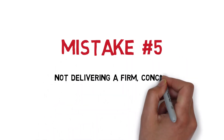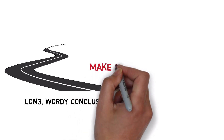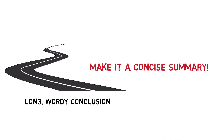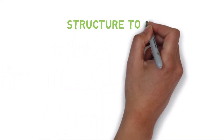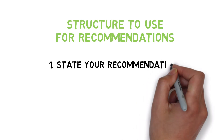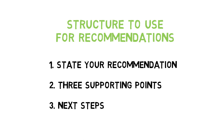Mistake number 5: not delivering a firm, concise recommendation. A lot of the time, candidates summarize all the work they did before proposing a recommendation at the very end. This is not the right approach, as the conclusion is meant to be a concise summary — not a regurgitation of everything that happened. To fix this, follow this simple structure: first, clearly state your recommendation. Second, follow with three reasons that support it. Finally, end by stating potential next steps to confirm or further validate your recommendation. This keeps your recommendation simple but very clear.